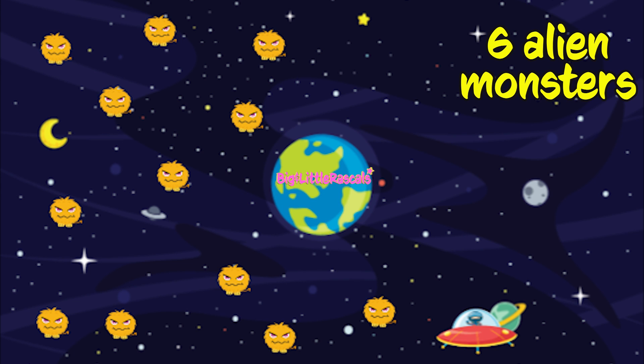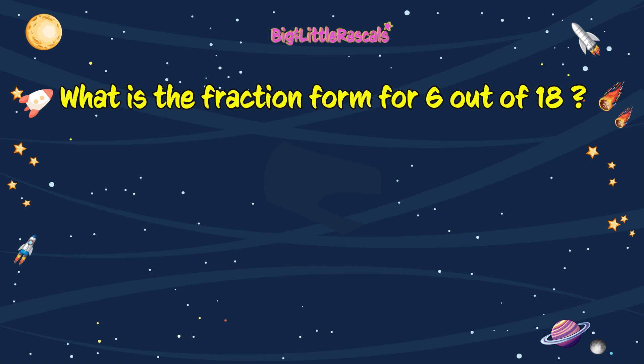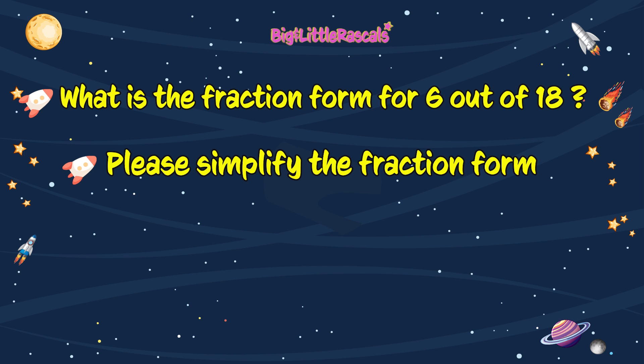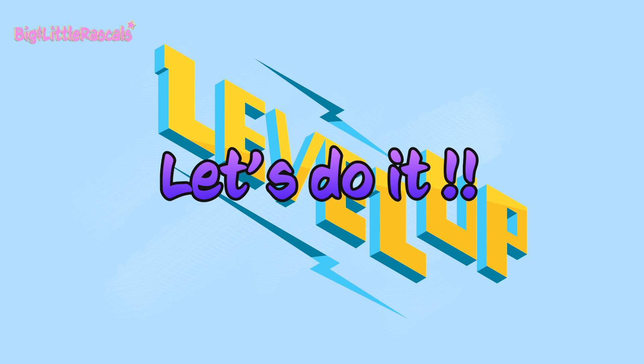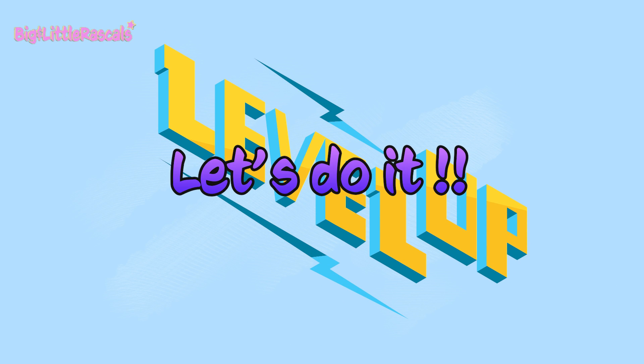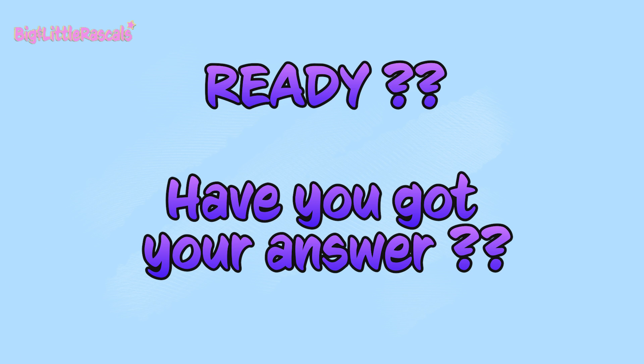Sam is catching the alien monster one by one from attacking the earth. Now, let's ask Sam, have you caught all the alien monsters? Sam replied, I have caught 6 out of 18 alien monsters. Now, can you please tell us the fraction form of 6 out of 18 alien monsters that have been caught by Sam? And, can you simplify it? And, how much more in fraction of the 18 alien monsters that Sam still needs to catch? Okay, let's do it! Please feel free to freeze this video when you do your calculation. Ready? Have you got your answer?